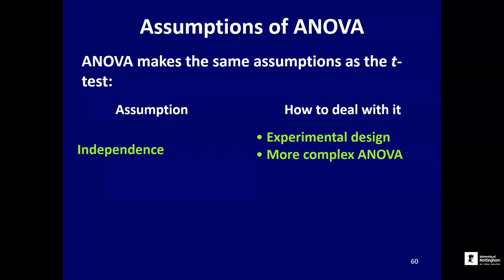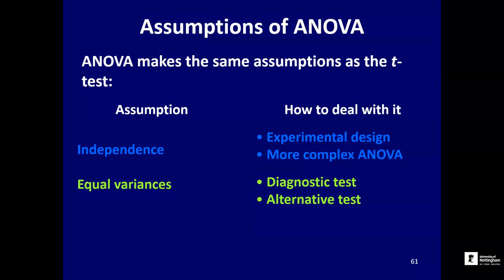Finally, I want to cover the assumptions of analysis of variance. ANOVA is a parametric test and, just like a t-test, it makes some assumptions. It assumes that your data are independent — they aren't paired, as we saw in the paired t-test. If you violate that assumption, there are more complicated forms of ANOVA which can cope, a bit like how a paired t-test handles a lack of independence. But it's tricky and doesn't always provide the solution you want. You can often rectify the problem before you start by carefully designing your experiment so that the data are independent.